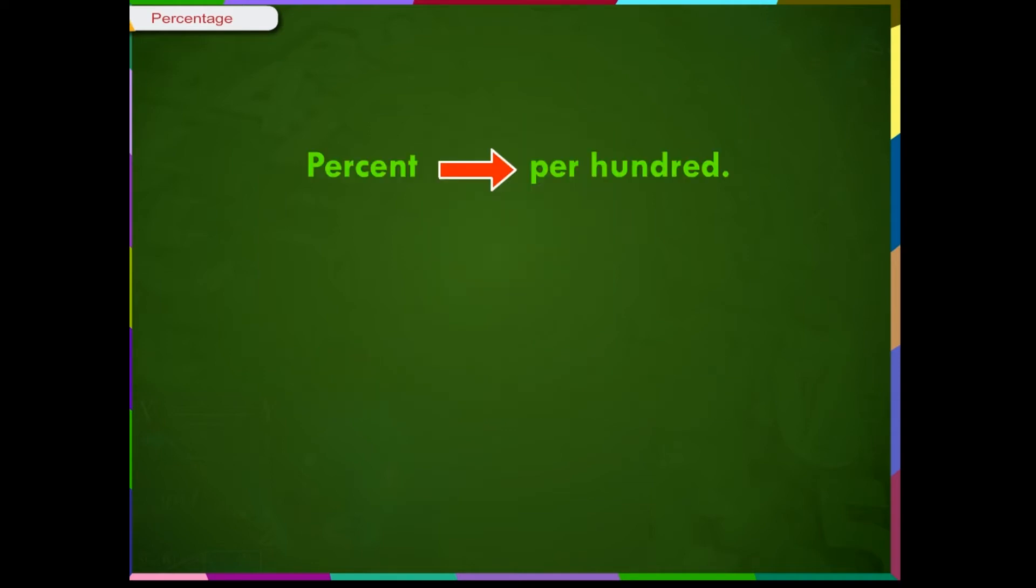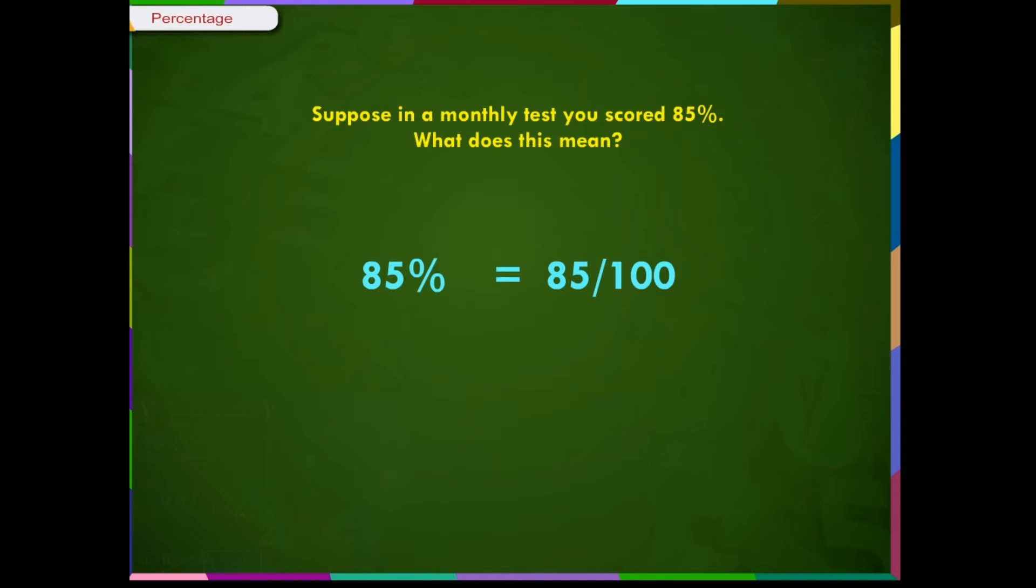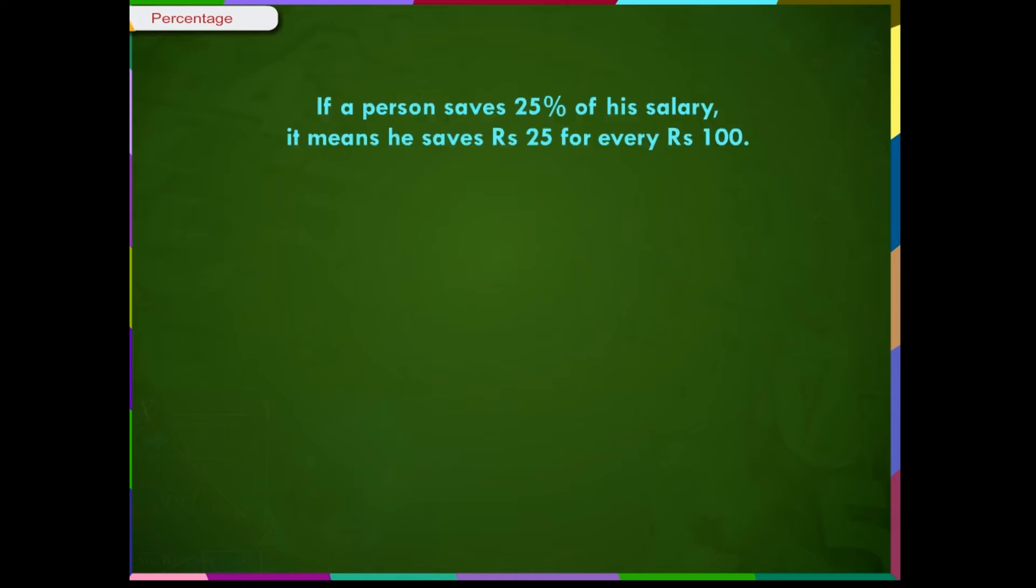Percent means per hundred. When the denominator of a fraction is one hundred, we call it a percentage. For example, 15/100 is 15%, and 23/100 is 23%. Suppose in a monthly test you scored 85%. This means you have scored 85 marks for every 100. If a person saves 25% of his salary, it means he saves rupees 25 for every rupees 100. Let us understand the concept of percentage by some examples.